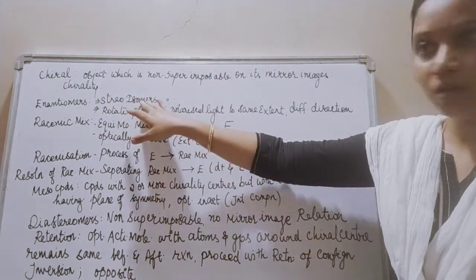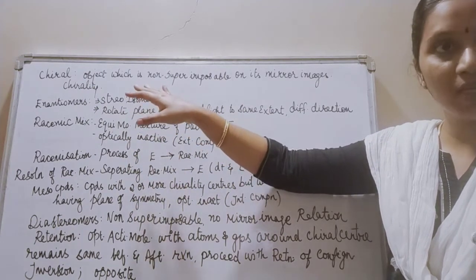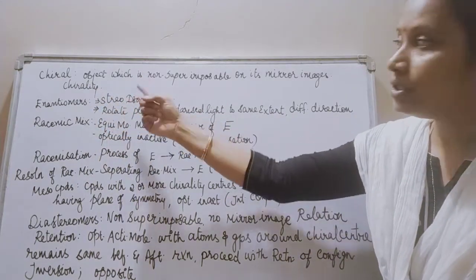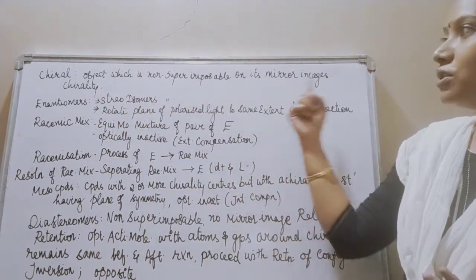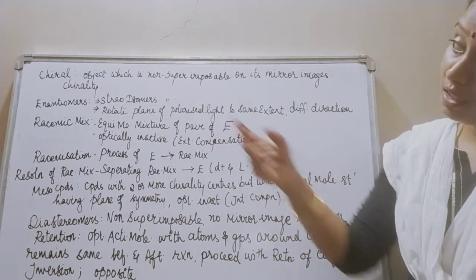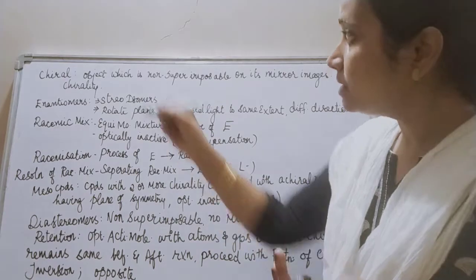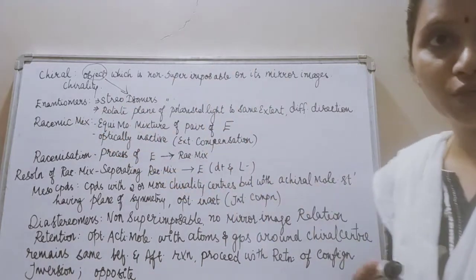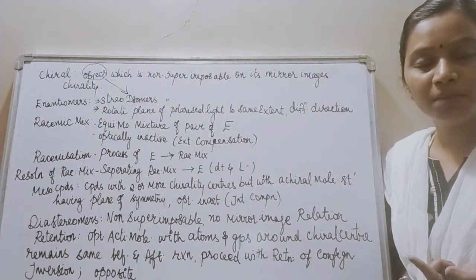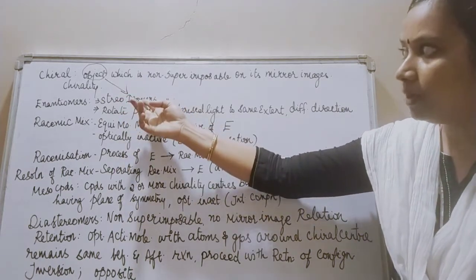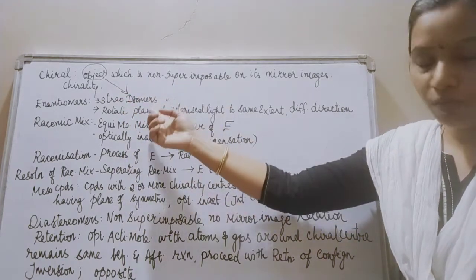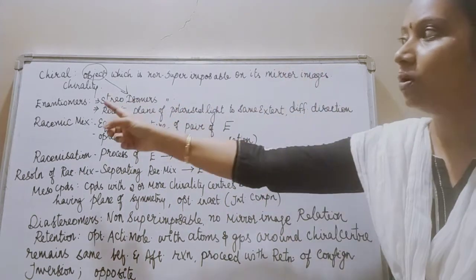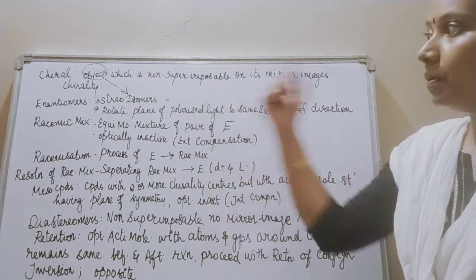What are enantiomers? We have seen what stereoisomers are — stereoisomers differ in spatial arrangement. Enantiomers are stereoisomers which are non-superimposable on their mirror image. Just replace the term 'object' with 'stereoisomers' and you will know what enantiomers are. Stereoisomers which are non-superimposable on their mirror image are called enantiomers.